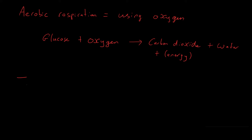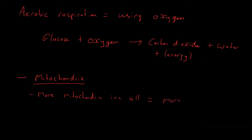Aerobic respiration is carried out in the organelle known as the mitochondria. Anaerobic respiration is different — it doesn't happen in the mitochondria. As a result, if you see a cell with more mitochondria, that equals a more active cell. The cell is going to be using more energy if it has more mitochondria.